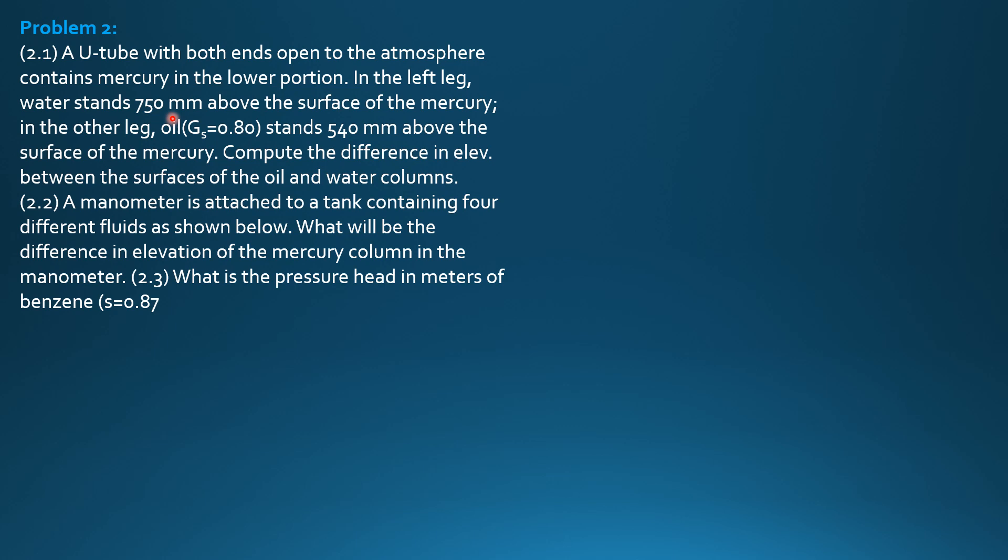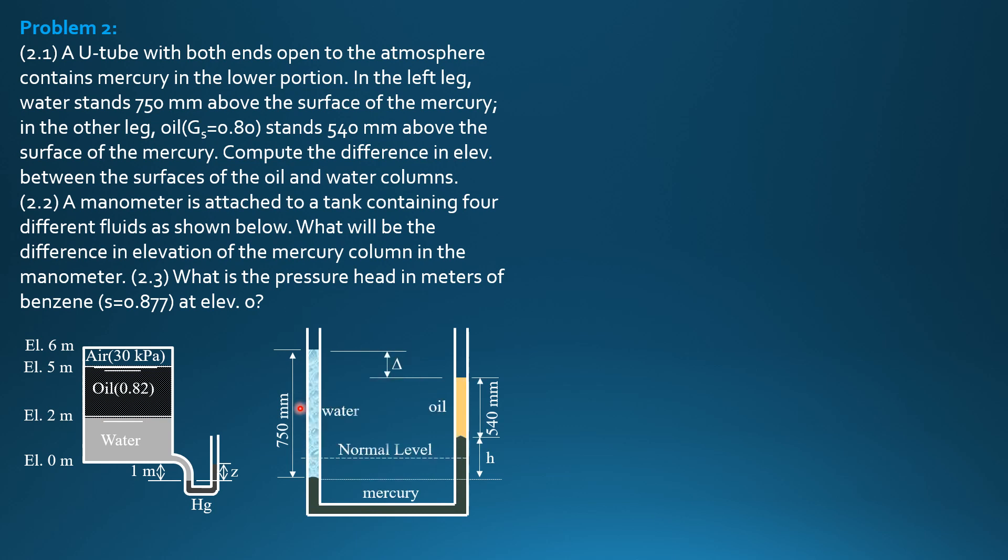So let's concentrate on the first question first. Let's draw the figure to help analyze the situation. So this is the U-tube. This is the normal level when there is no water and oil in the legs. They are at the same level.